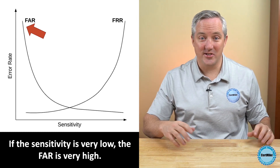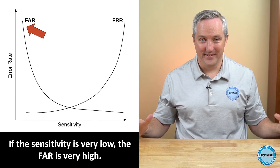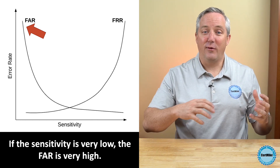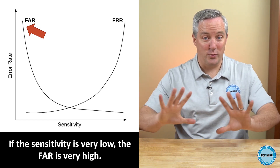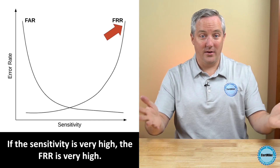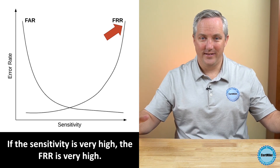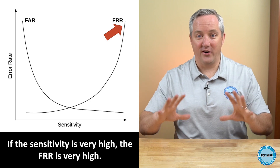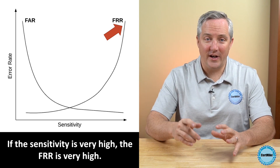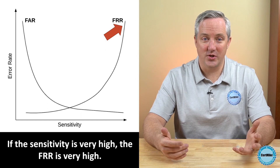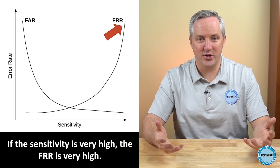That guarantees us a false rejection rate of 0% because we're not rejecting anybody. On the other hand, if we turn the sensitivity of the system all the way up and tell the system to just reject everybody, that gives us a false acceptance rate of 0% because we're rejecting everyone. Of course, those systems wouldn't be very useful, but they illustrate the point. In order to really evaluate the effectiveness of an authentication system, we need a measure that combines the false acceptance rate and the false rejection rate.